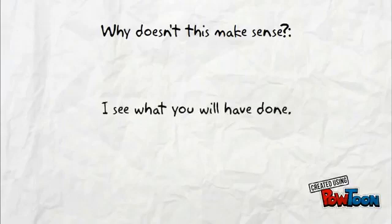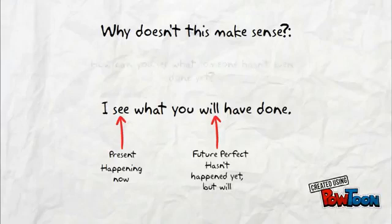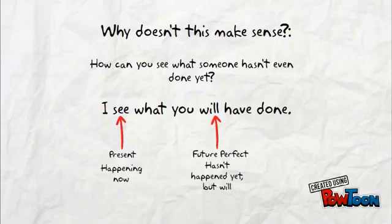I see what you will have done. 'I see' is in the present tense, meaning it is happening now. 'You will have done' is in the future perfect tense, meaning it hasn't happened yet, but will. The question here is: how can you see what someone hasn't even done yet?